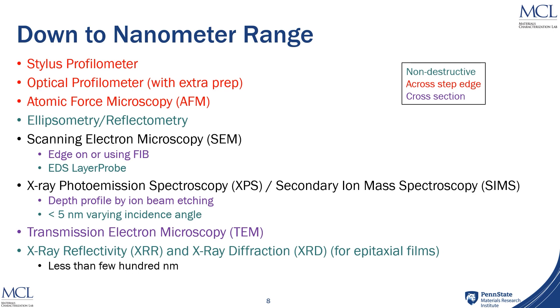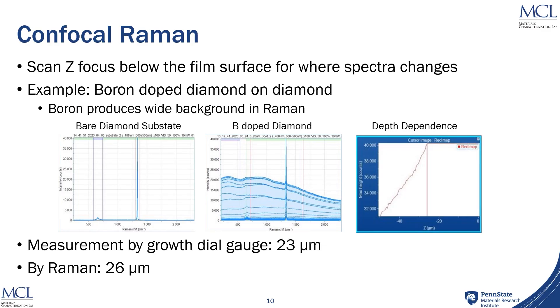Let me give you some examples from real materials. The first example is confocal Raman. Here you would be looking for the Raman signal as you scan the Z-focus below the surface of your film into the substrate. An example here is boron-doped diamond on diamond — this would normally be an extremely difficult thing to measure. On the left we have a Raman spectrum of what a bare diamond substrate looks like; in the middle, what the Raman spectrum of boron-doped diamond is. As you scan the Z-focus through the material and watch the changes in the spectra, you can see where the boron signal in diamond starts to decay and use that to measure where the end of that layer is. For this sample, they used a dial gauge to measure the surface of the substrate and then after depositing the film got a thickness of about 23 microns. By using confocal Raman, they were able to measure a thickness of about 26 microns.